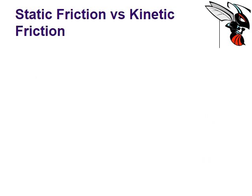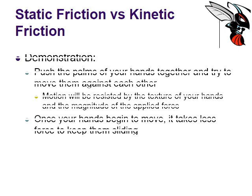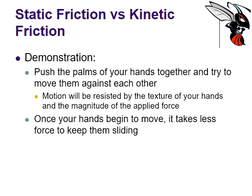A nice and easy demonstration of static versus kinetic friction is by rubbing the palms of your hands together. If you push hard on your palms and then try to move them, it's actually fairly hard to get them into motion — that's the static friction you must overcome. Once you do overcome that initial static friction, the kinetic friction is significantly less and your palms should actually slide across each other quite quickly, because you're only trying to overcome kinetic friction, which takes less force.